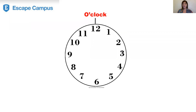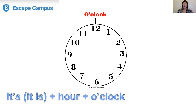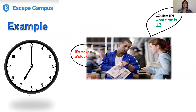Let's begin. If the long hand is on number 12, we use o'clock. We say: it's plus the hour plus o'clock. For example: 'Excuse me, what time is it?' 'It's seven o'clock.' The long hand is on number 12, the short hand is on number seven, so it's seven o'clock.